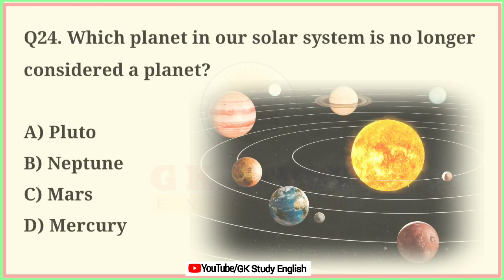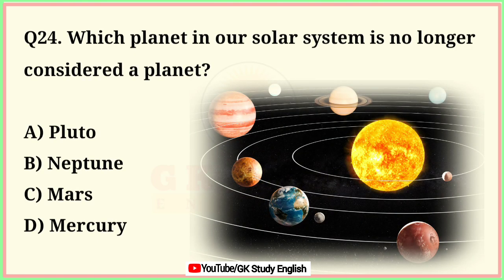Question number 24. Which planet in our solar system is no longer considered a planet? A. Pluto. B. Neptune. C. Mars. D. Mercury. Correct answer is option A. Pluto.